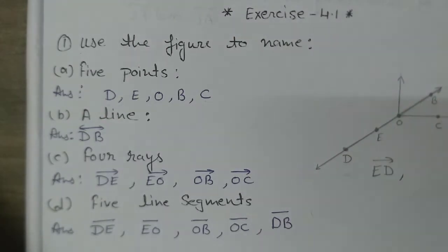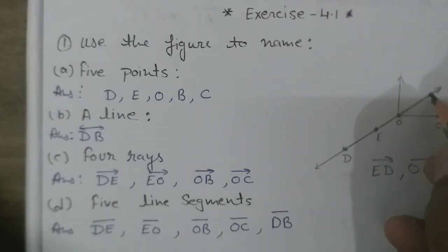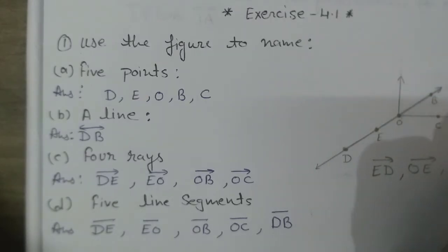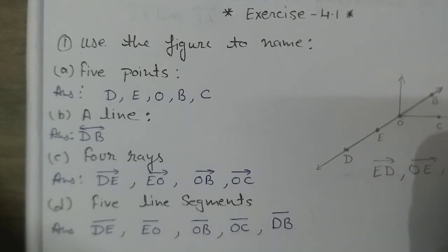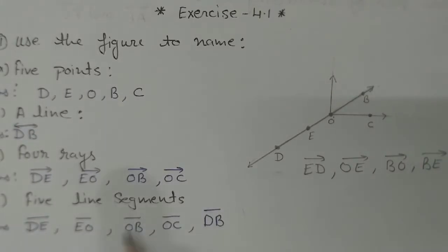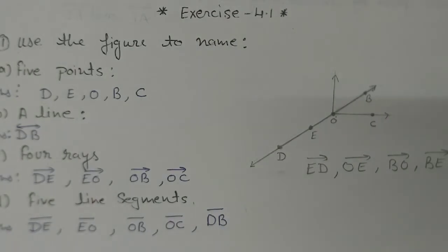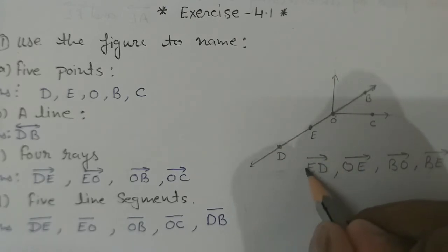E to O to E — then O to E we cannot write as A. Similarly, B to O to E we cannot write as A. For ray, we can write with the arrow symbol going in one direction.